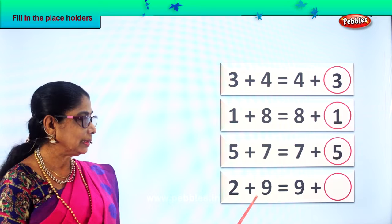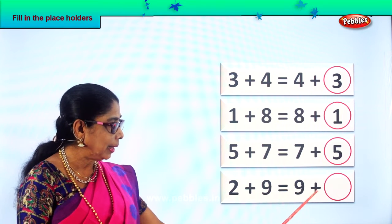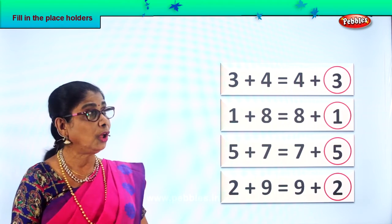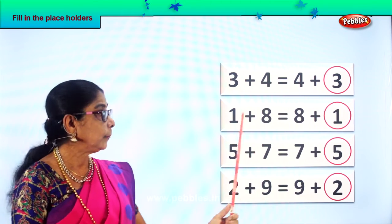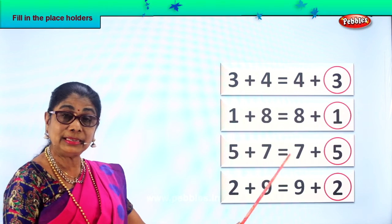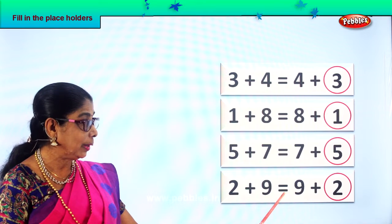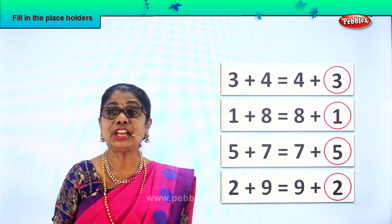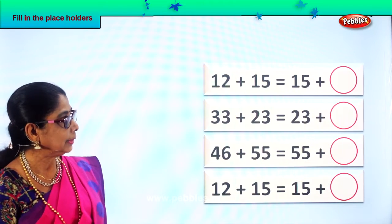And here: two plus nine. What is two plus nine equal to? Two plus nine is equal to nine plus two. Look at the whole lot again: three plus four is equal to four plus three; one plus eight is equal to eight plus one; five plus seven is equal to seven plus five; and two plus nine is equal to nine plus two. Did you enjoy filling in the placeholders?